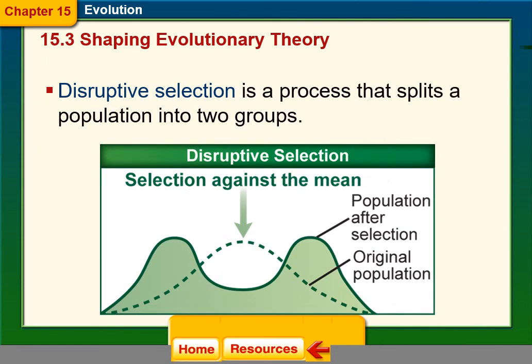Disruptive selection is a process that splits a population into two groups. Generally, from this we can get new species, because eventually these two groups become so genetically diverse from each other that they may become two new species.